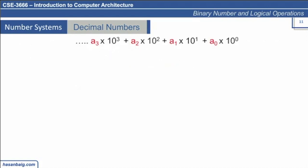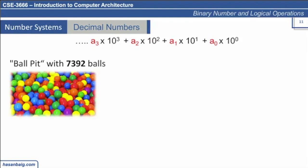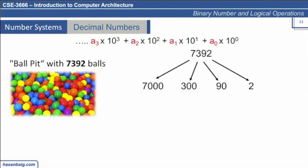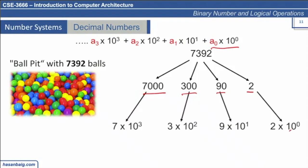Considering this standard representation, let's assume we have to represent 7392 balls in a ball pit. How would you represent the number 7392? We can explain it based on their place value. We can write it as 2, then 90, then 300, then 7000. We can further write it as 2 times 10 to the power of 0, then 10 to the power of 1, 10 to the power of 2, and 10 to the power of 3. When we add all of them together, it gives you the same result, 7392. This is a general representation.